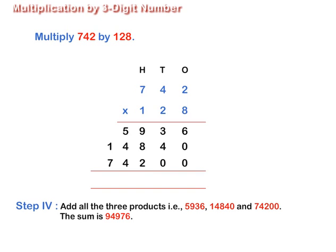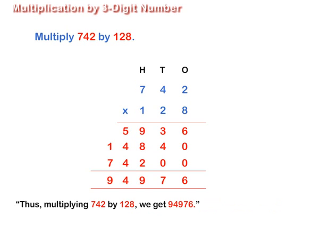Step 4: Add all the three products — that is, 5,936, 14,840, and 74,200. The sum is 94,976. Thus, multiplying 742 by 128, we get 94,976.